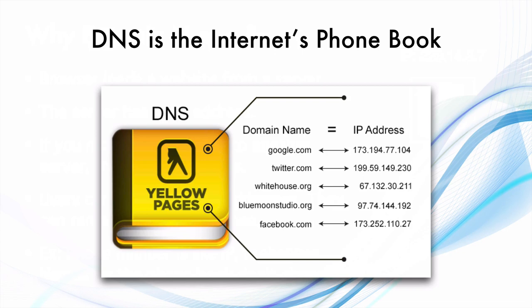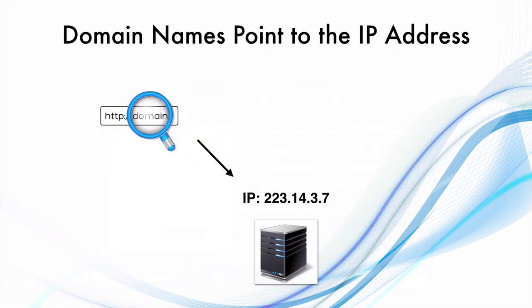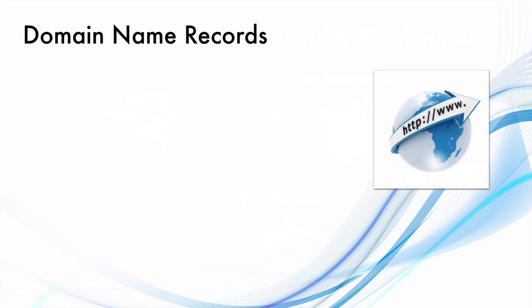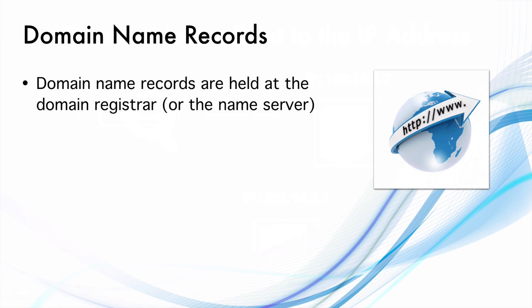DNS is the internet phone book. Each and every website has an IP address which changes from time to time. So let's say you have your website at a specific IP address — whenever someone searches for a domain name, the DNS record has this IP address on file and the browser will load the files from this server. If your IP address changes, you just need to update your domain name with a new IP address and the website will load from the new server. Each and every domain name has something called domain name records where these details are stored, usually held at the domain registrar or the name server, which I will explain in future videos.